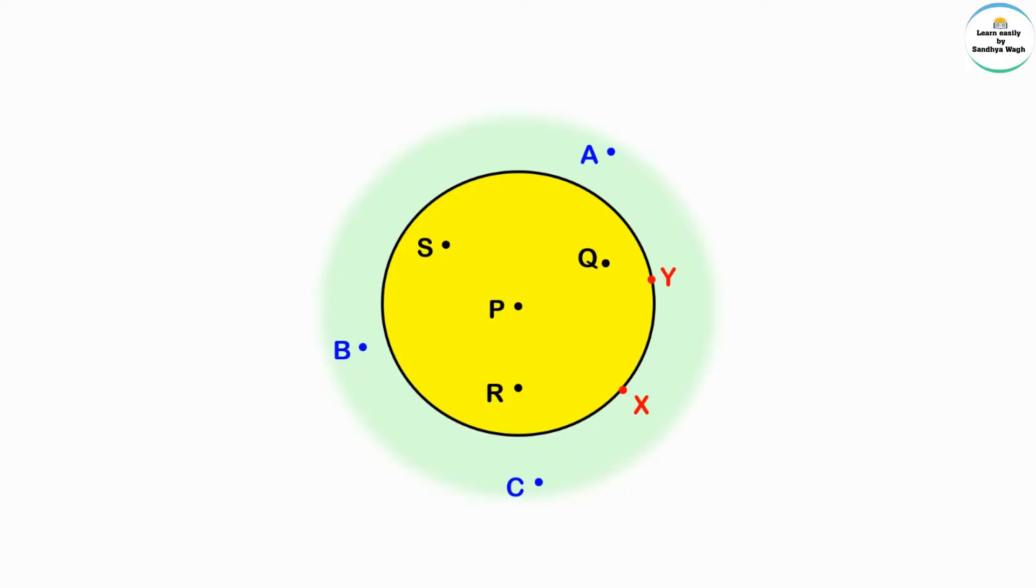Now, this is a circle whose center is P. On this circle, we also have some points. Can you tell which points? Yes, correct - point X and point Y. These points are called points on the circle because the points are on the circle itself.